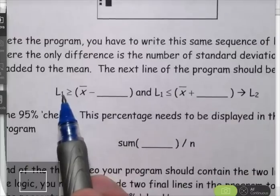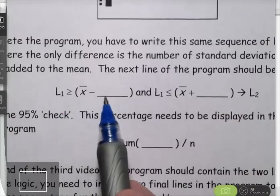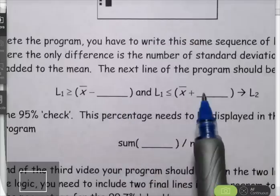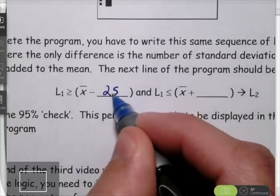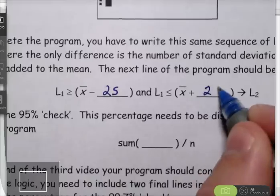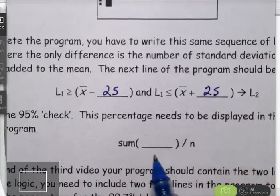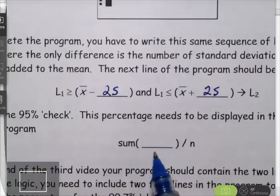So the only difference in the logic, rather than just subtracting one standard deviation and adding one standard deviation to the mean, we're going to subtract two standard deviations or add two of them to the mean. Same thing then, we'll have to display the same sum.